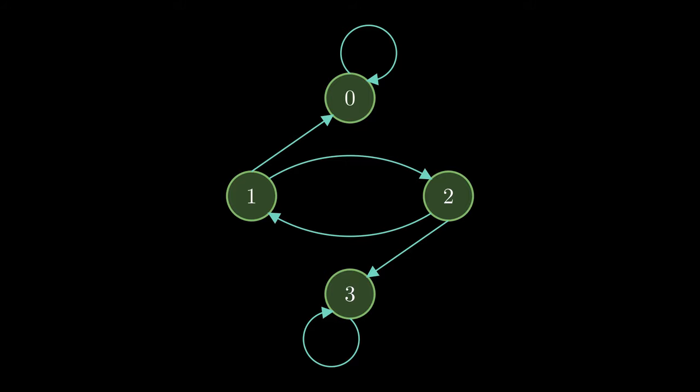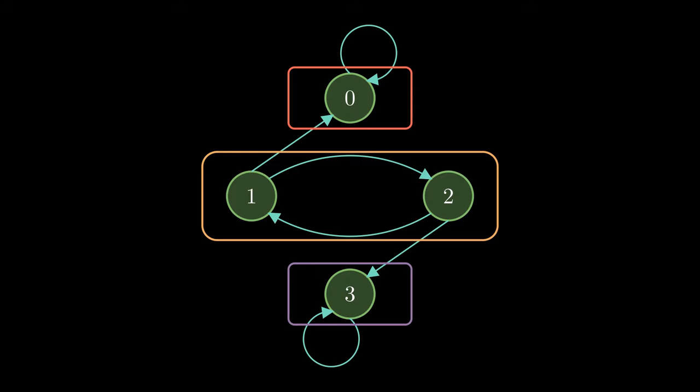On the basis of this communication, we divide the states into classes. Here we can have three classes. The first one contains state 0, second contains state 1 and 2, and the last one contains state 3. Between any of these classes, we can always go from any state to the other. And yes, these classes are known as communicating classes, if you haven't guessed that already.